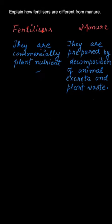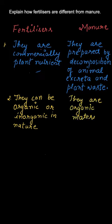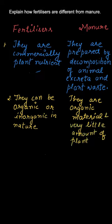That could be the first distinguishing point. Now let us go for the second point: fertilizers can be organic or inorganic, whereas manure is an organic material. Also, manure has a very little amount of plant nutrients compared to fertilizers.